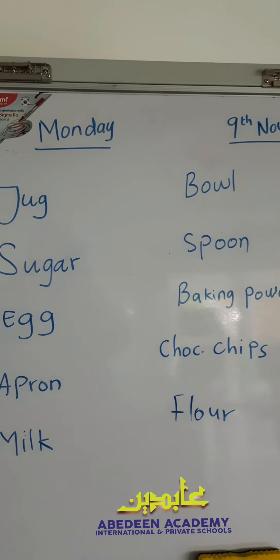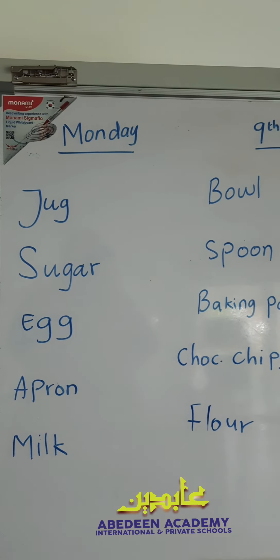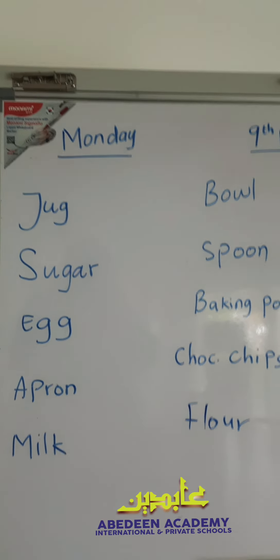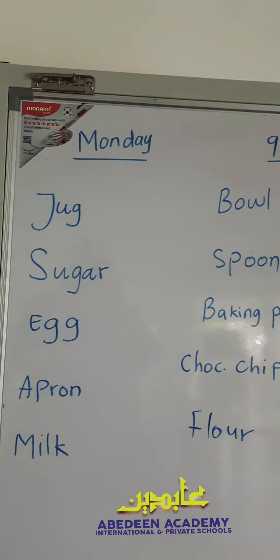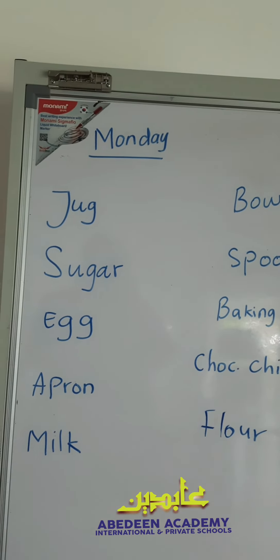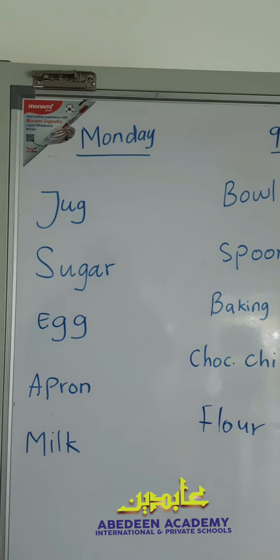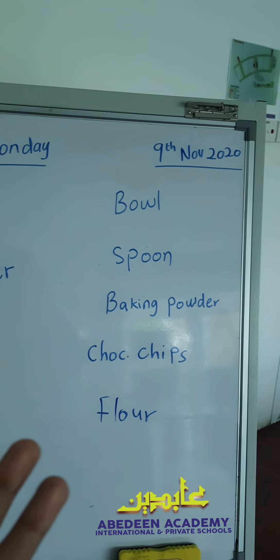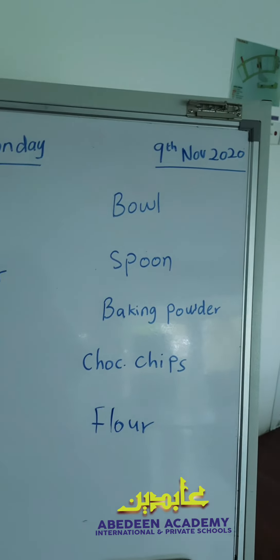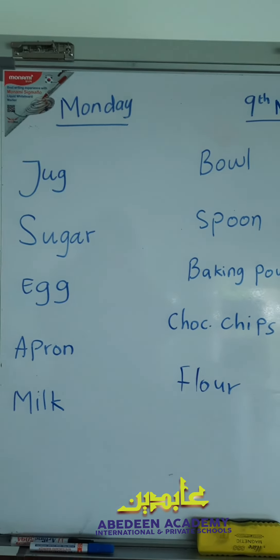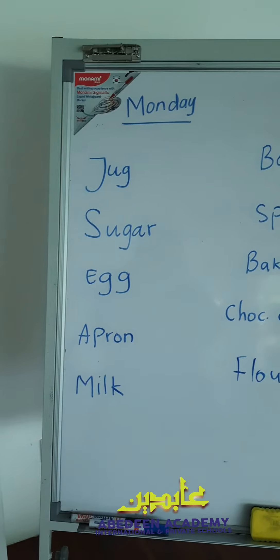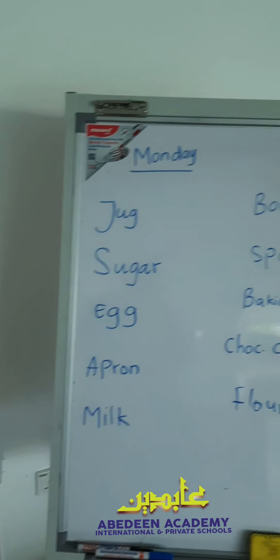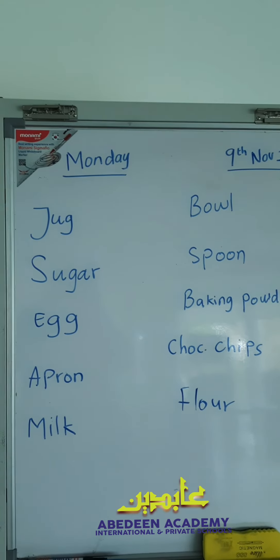How to read these words — when we have our live class, I will show you these objects and we can see what can we make with these things. In the meantime, can you guess? If you have all these things — a jug, sugar, egg, apron, milk, bowl, spoon, baking powder, chocolate chips, flour — what do you think we can make with all of these things? Try to guess and let me know. You can comment in Class Dojo or in Skype and just let me know what you think we should do with all of this.